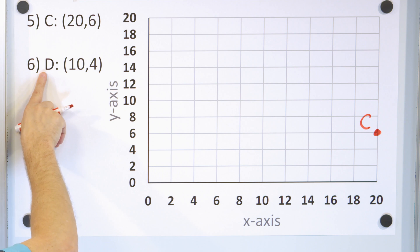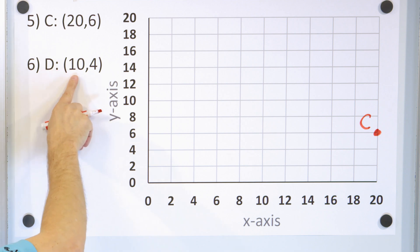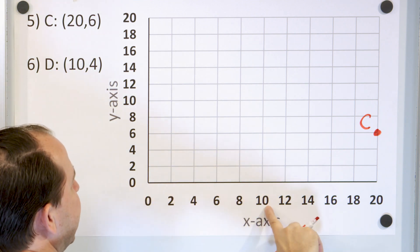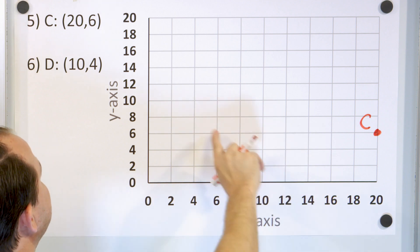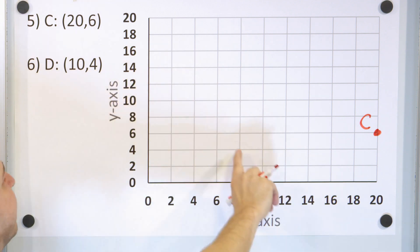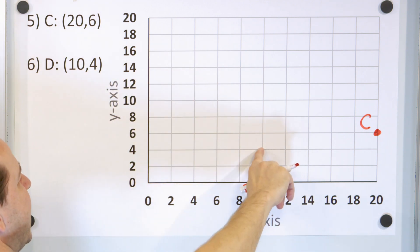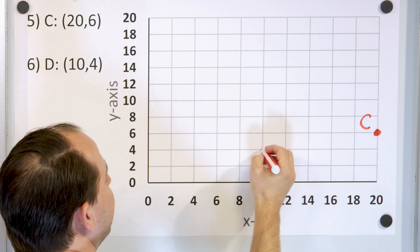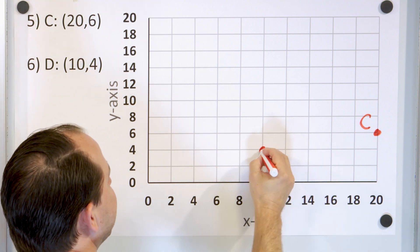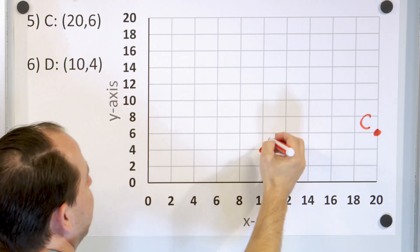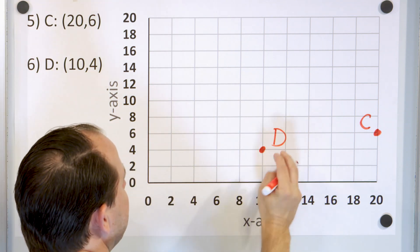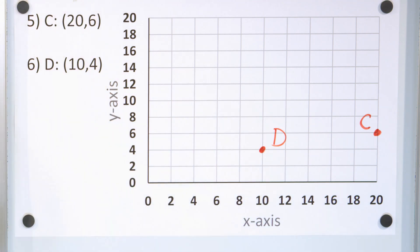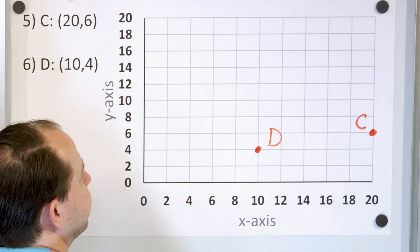Next, point D at 10 comma 4. X is 10, so we go to 10 right here. Then y is 4 — counting 2, 4. So it's 10 for x and 4 for y, meaning the point is right here. We call it point D. 10 for x, 4 for y.